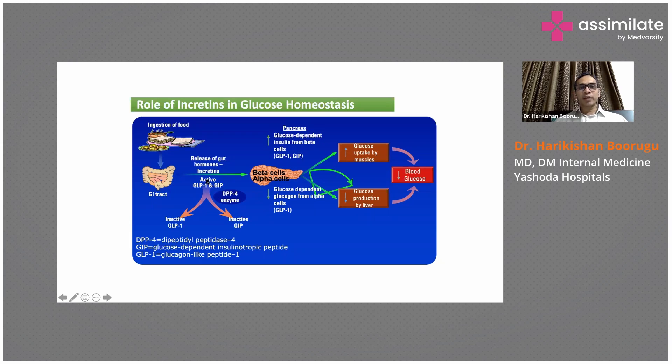What do incretins do? They stimulate beta cells in the pancreas, enhance insulin secretion, and reduce glucagon levels.